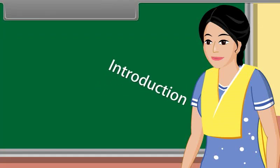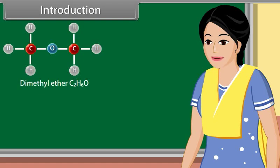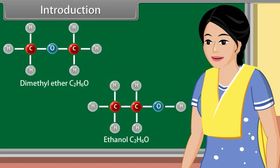Today we learn isomers and concepts used in organic reaction mechanism. The organic compounds which have same molecular formula but different configurations are called isomers. The examples of isomers are dimethyl ether and ethanol. They have same molecular formula but different configuration.